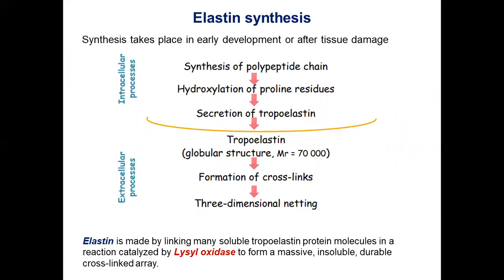Linking of the polypeptide chains of elastin by cross-links constitutes a three-dimensional network and explains the rubber-like properties of elastin. Elastin synthesis takes place during early development or after tissue damage. Like collagen synthesis, elastin synthesis has intracellular and extracellular phases. The intracellular process involves synthesis of the polypeptide chain, hydroxylation of proline, and secretion of tropoelastin. Tropoelastin is a soluble protein. The extracellular process includes formation of cross-links, and elastin is made by linking soluble tropoelastin protein molecules in a reaction catalyzed by lysyl oxidase to form a massive, insoluble, durable, cross-linked array.